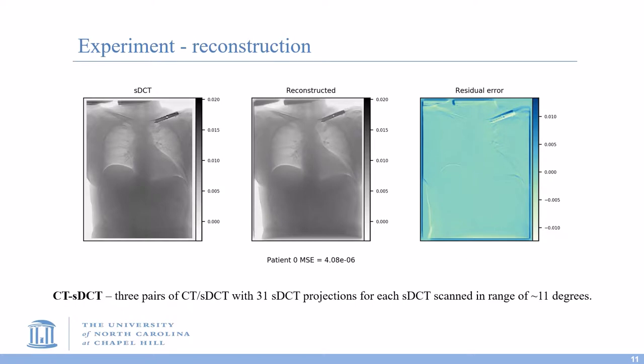We run our reconstruction algorithm on the clinically acquired dataset, which contains three pairs of CT and sDCT images with 31 sDCT projections. Here is the middle slice of the sDCT ground truth and the reconstructed volume for one data point. The reconstruction algorithm recovers the structures and has low mean squared errors.